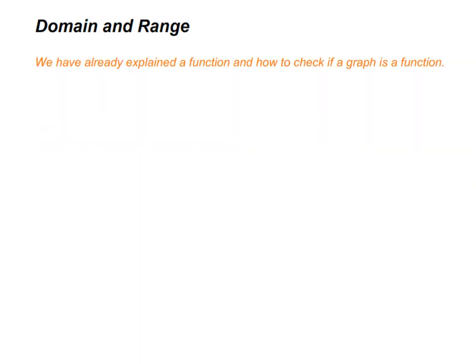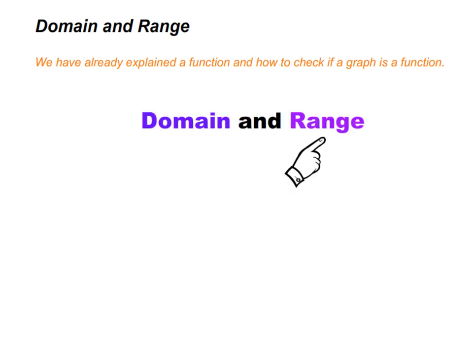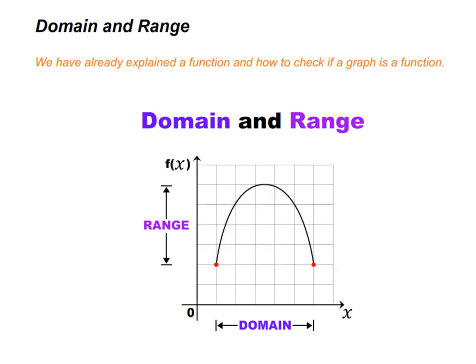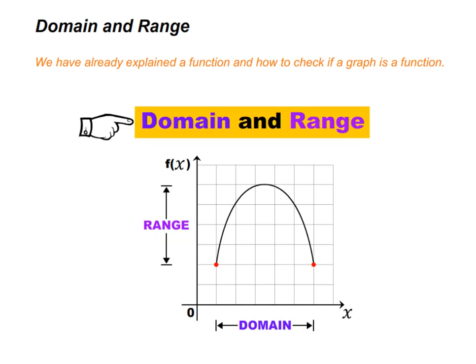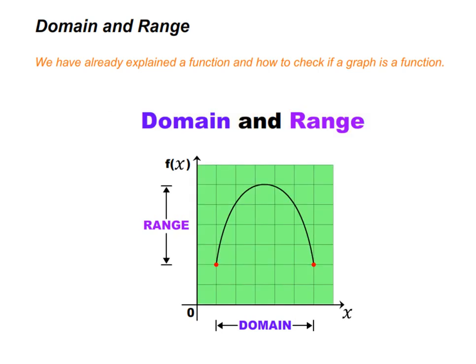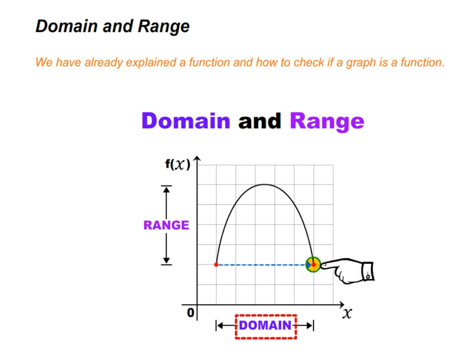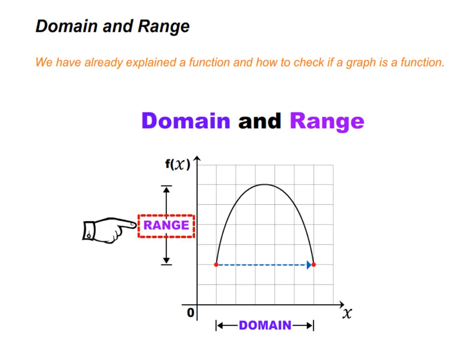Domain and range — we have already explained a function and how to check if a graph is a function. In this section we are going to work with domain and range. In simplest terms, the domain is all the x values that go into a function, and range is all the y values that come out. Domain and range are very important in defining a function. The domain will be x values from one end to another point, and the range will be y values across that span.